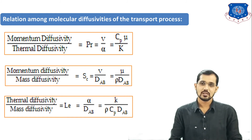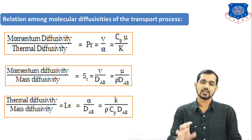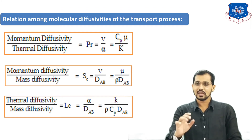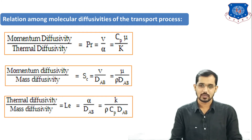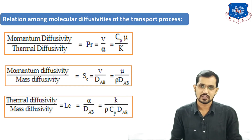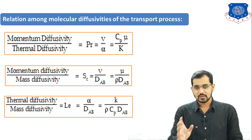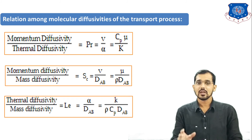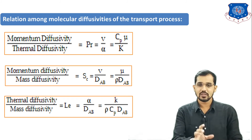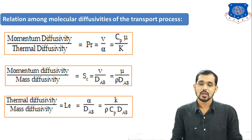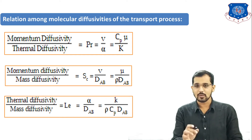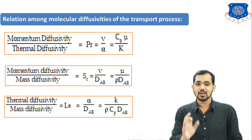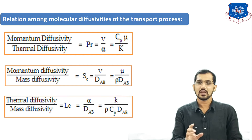These three ratios are very important for exam purposes and can be used for designing mass transfer equipment. A five to seven mark question can be asked on the definition of momentum diffusivity, thermal diffusivity, and the relation among molecular diffusivities of the transport processes. You have to explain the meaning of ν, α, Cp, μ, and K individually.